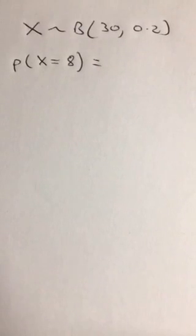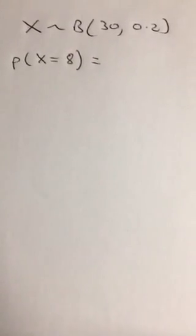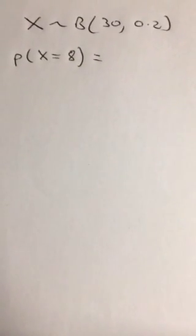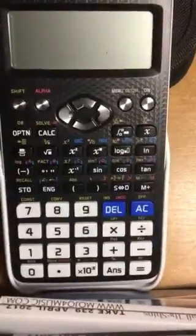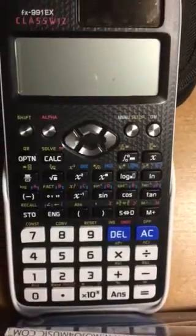Suppose we've got a binomial distribution with 30 events and the probability of success is 0.2. What's the probability that x equals 8? We can get this answer directly from the calculator.